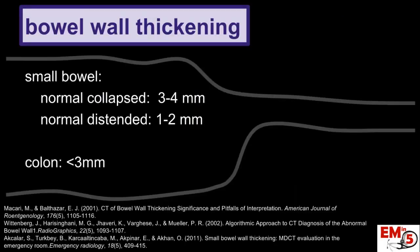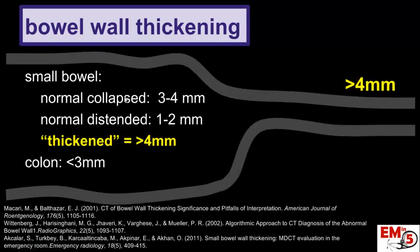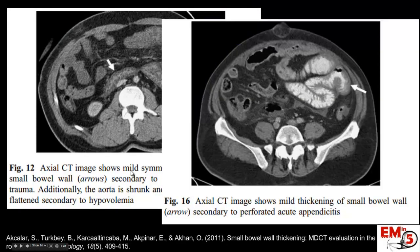The next thing we're going to look for is bowel wall thickening. A normal small bowel can be between 1 to 4 millimeters, depending on if it's distended. The key number to remember is greater than 4 millimeters of bowel wall thickening means it's abnormal. Here are a couple examples — you can see this bowel wall is thick here, and here's another good example where you can see the contrast inside the bowel and the wall is very thickened.